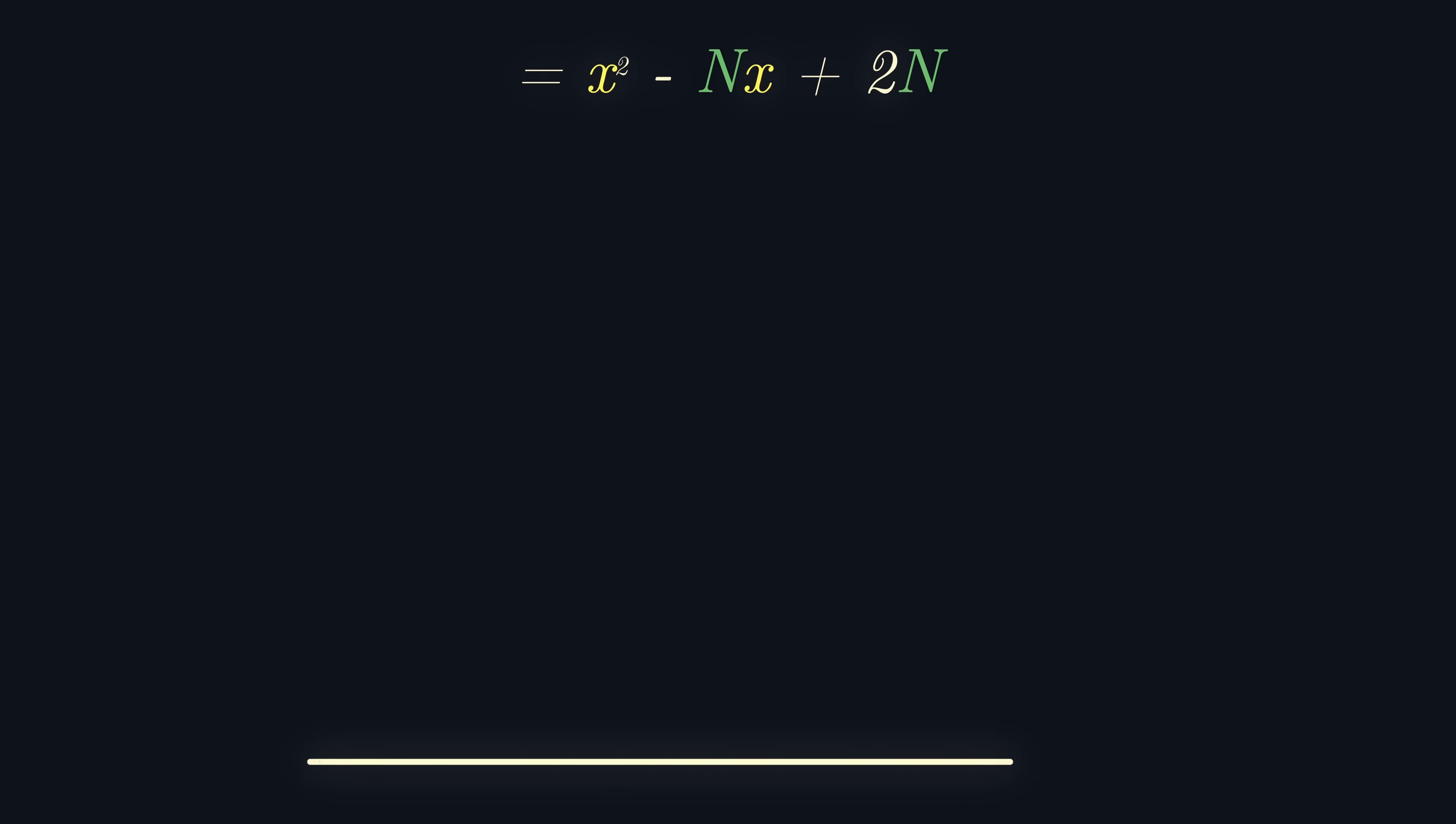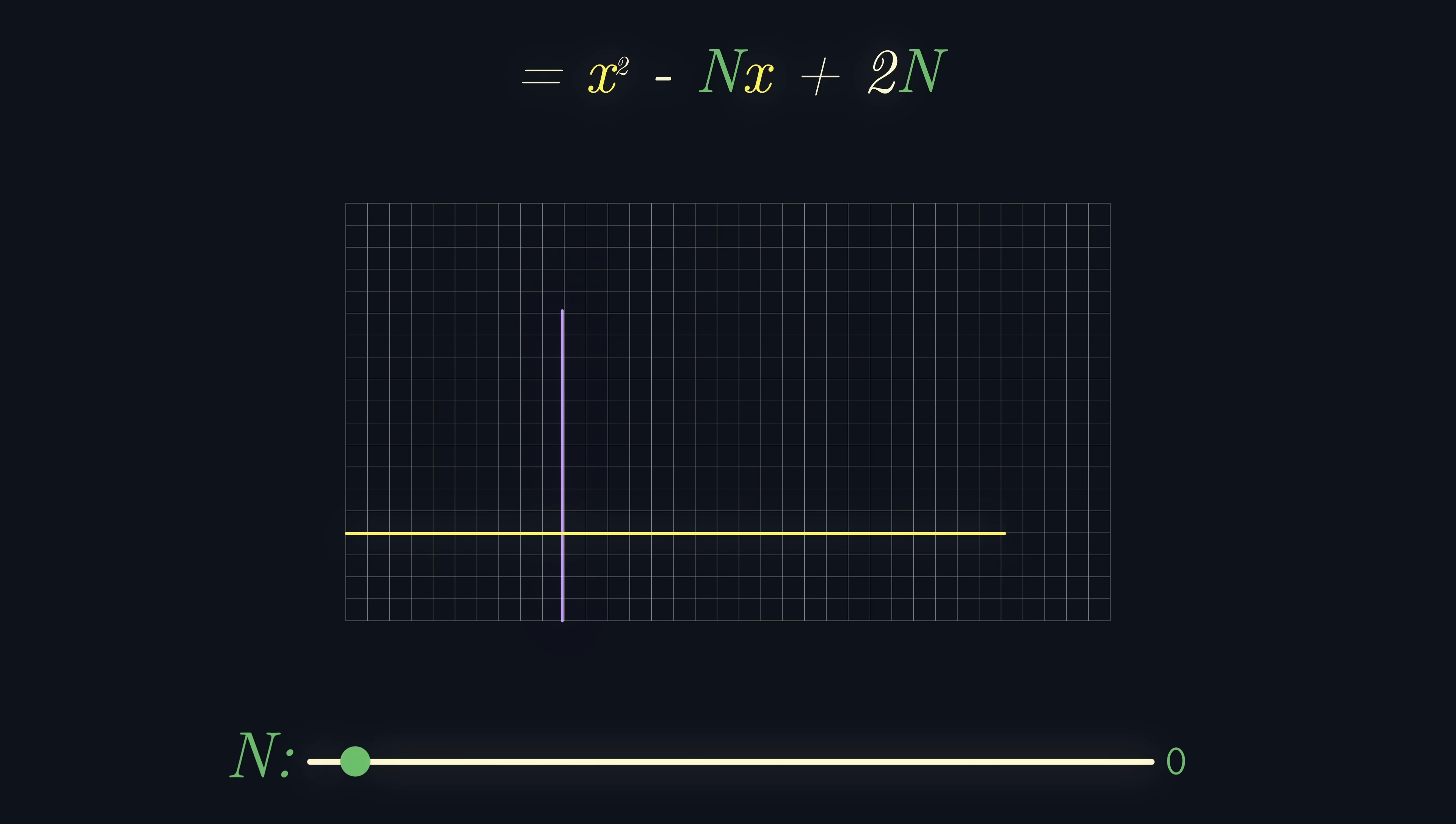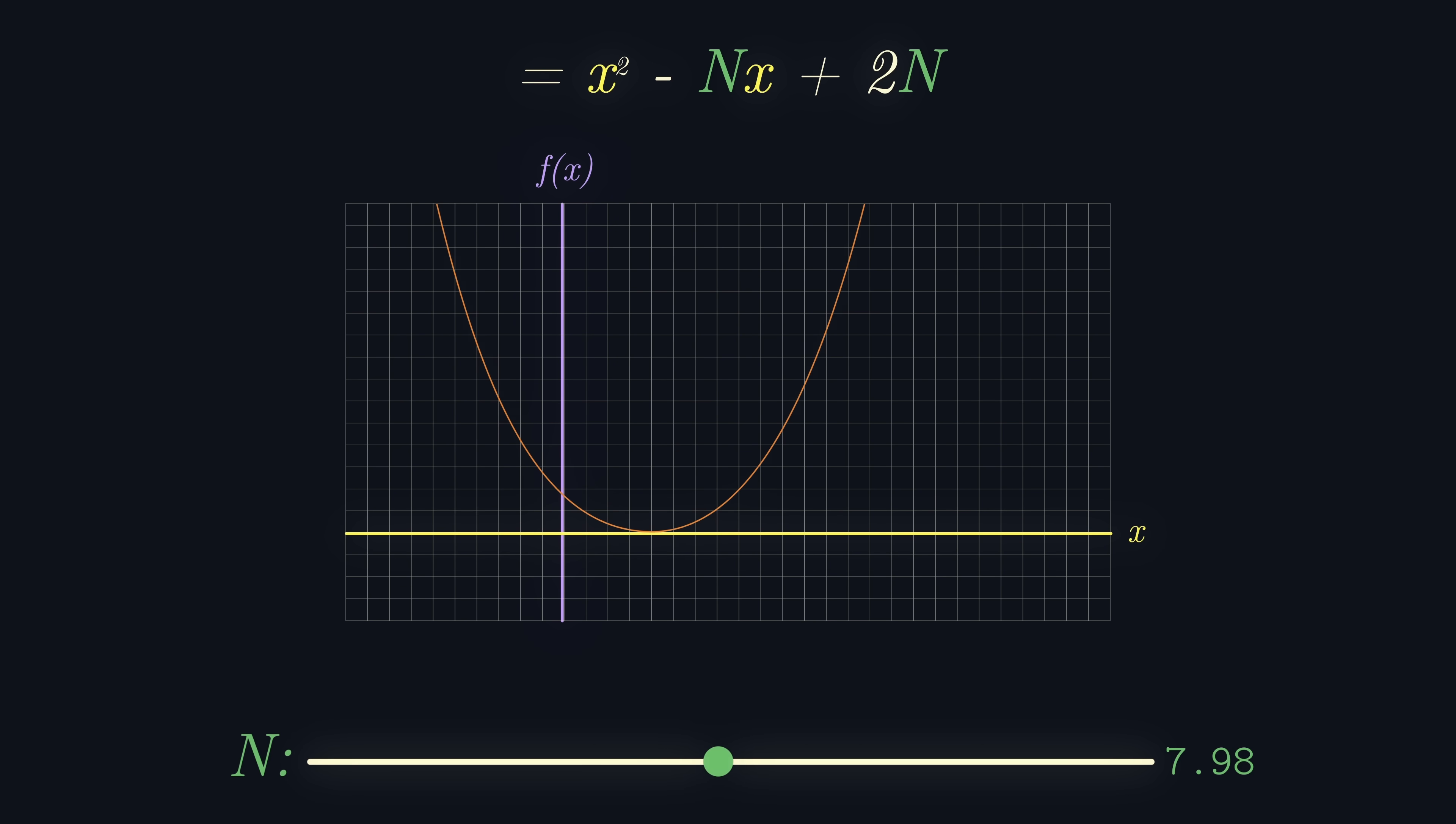Now, our quadratic only has one constant which we can vary freely. In particular, when n is greater than 8, we can see from the graph, or by completing the square, that there are precisely two positive real roots, which correspond to the two side lengths of our rectangle. Isn't that wonderful?